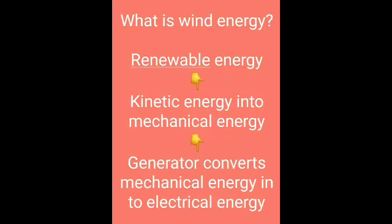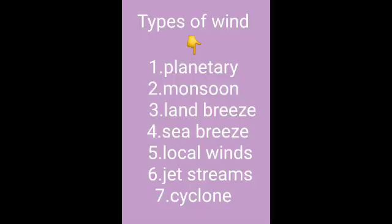Now we will see the different types of wind. There are seven types: one is planetary wind, second is monsoon wind, third is land breeze, fourth is sea breeze, fifth is local winds, sixth is jet streams, and seventh is cyclones.